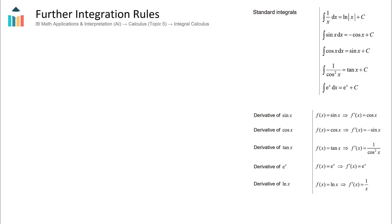For a little bit of revision, what we should hopefully know from the basics of integration and anti-differentiation: if we have the integral of 3x² with respect to x and we want to find this integral, we need to first identify if it is a definite or indefinite integral. This is an indefinite integral — there are no numbers at the top and bottom — so our answer will be another function. We use our integrating technique for x to the power of something: we raise the power by 1.